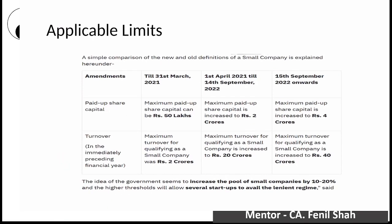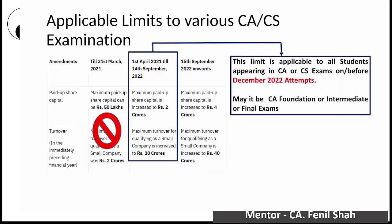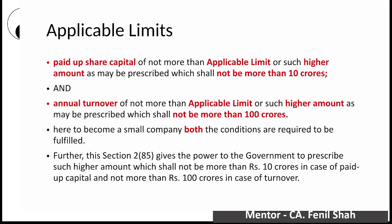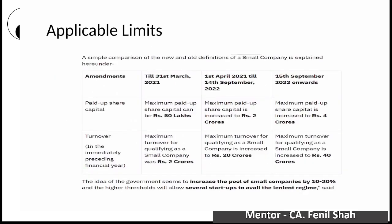You can see on the screen the limits which are applicable. When the Companies Act was first introduced, the original limit was paid-up capital of 50 lakhs and turnover of 2 crores. If both these limits were fulfilled, you were eligible as a small company. The government then increased these limits. The limit has been increased as of 15th September 2022.